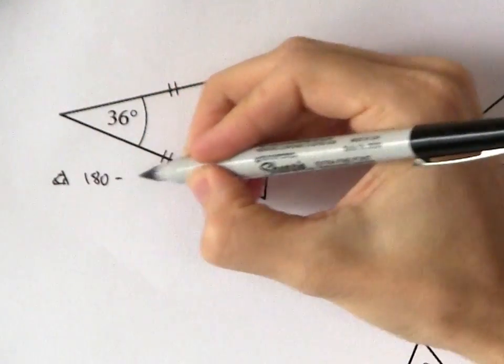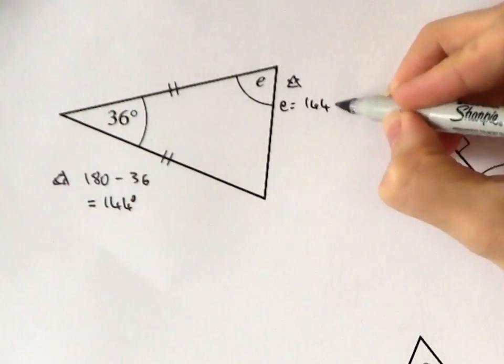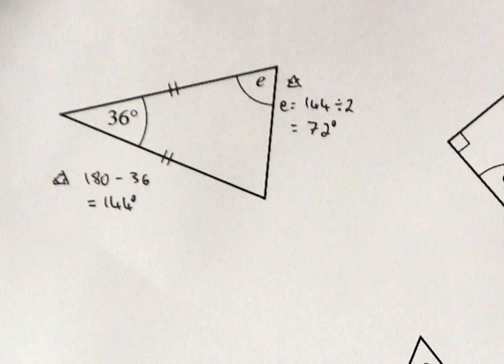Thirty-six less than that leaves 144 degrees, which has to be shared between the two base angles. But the base angles are congruent, so if I divide 144 in half, I'll get 72 degrees for E.